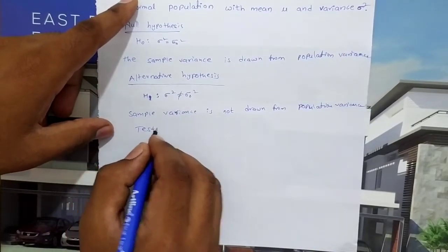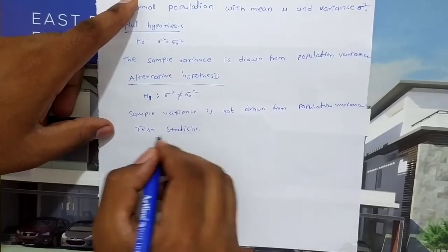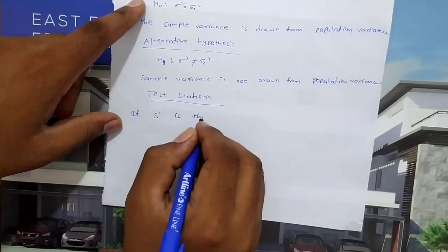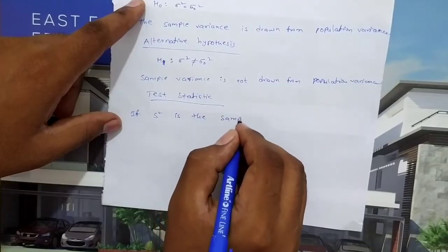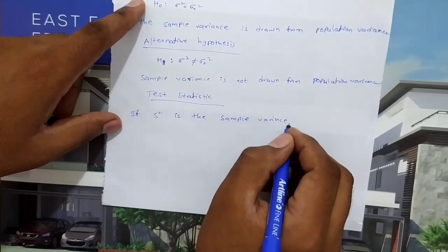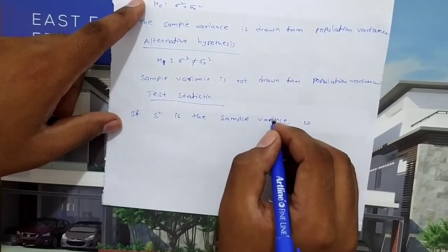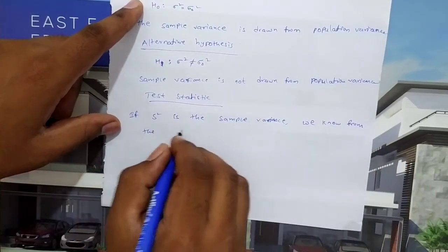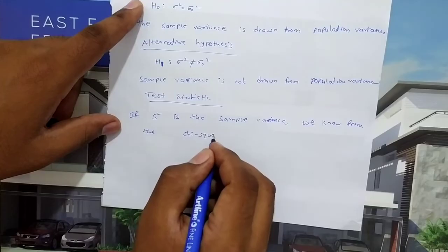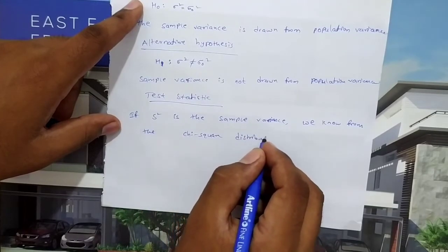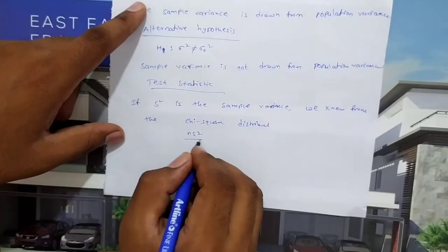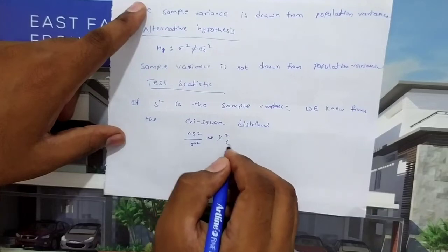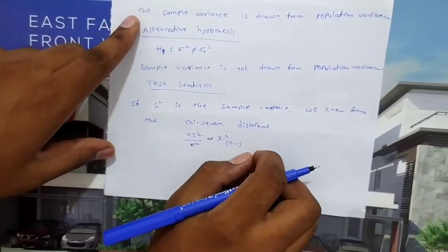Test statistic: We know from the chi-square distribution that ns²/σ² follows a chi-square distribution with n−1 degrees of freedom.